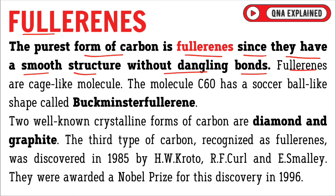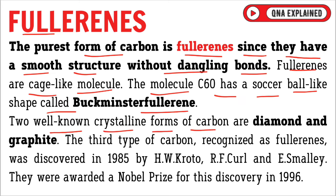Fullerenes are cage-like molecules. The molecule C60 has a soccer ball-like shape called Buckminster Fullerene. Two well-known crystalline forms of carbon are diamond and graphite.